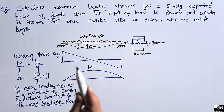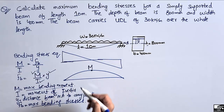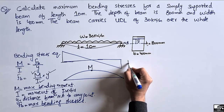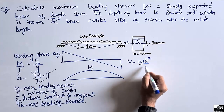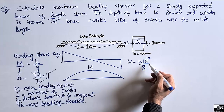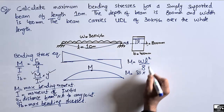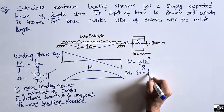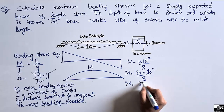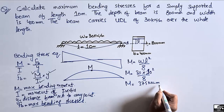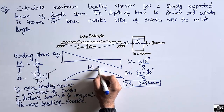We have three unknowns: the bending moment M, y, and I. The maximum bending moment for a simply supported beam with a uniformly distributed load is given by the formula wL²/8. With w = 30 kN/m and L = 10 m, dividing by 8 gives a maximum bending moment of 375 kN·m.